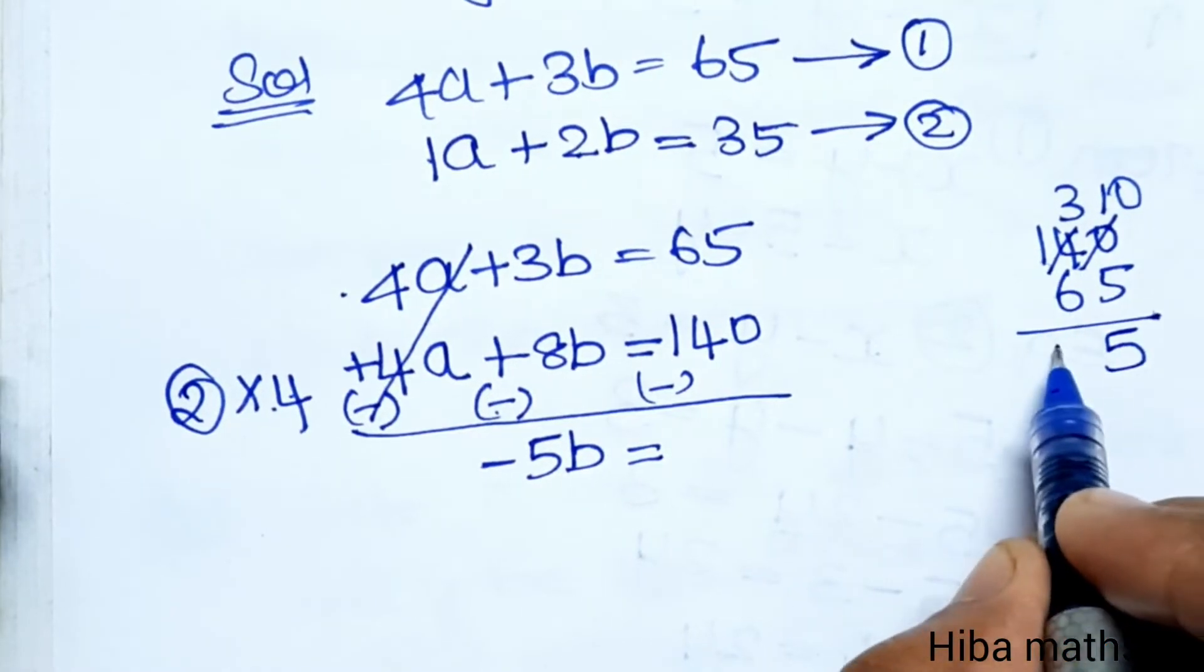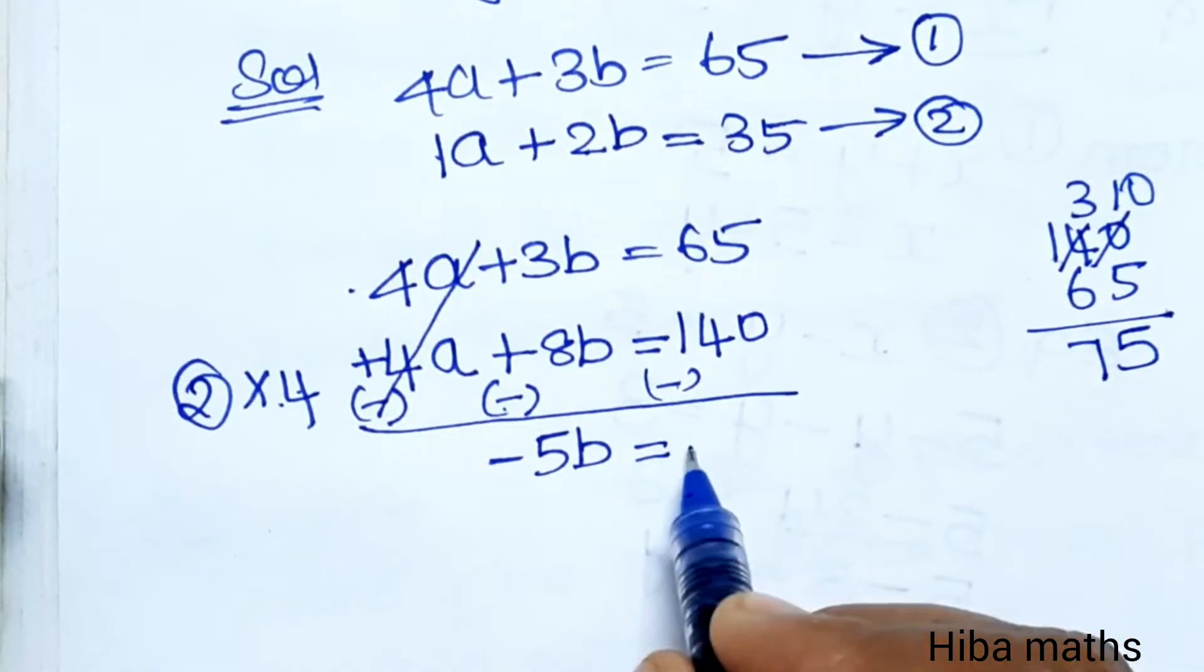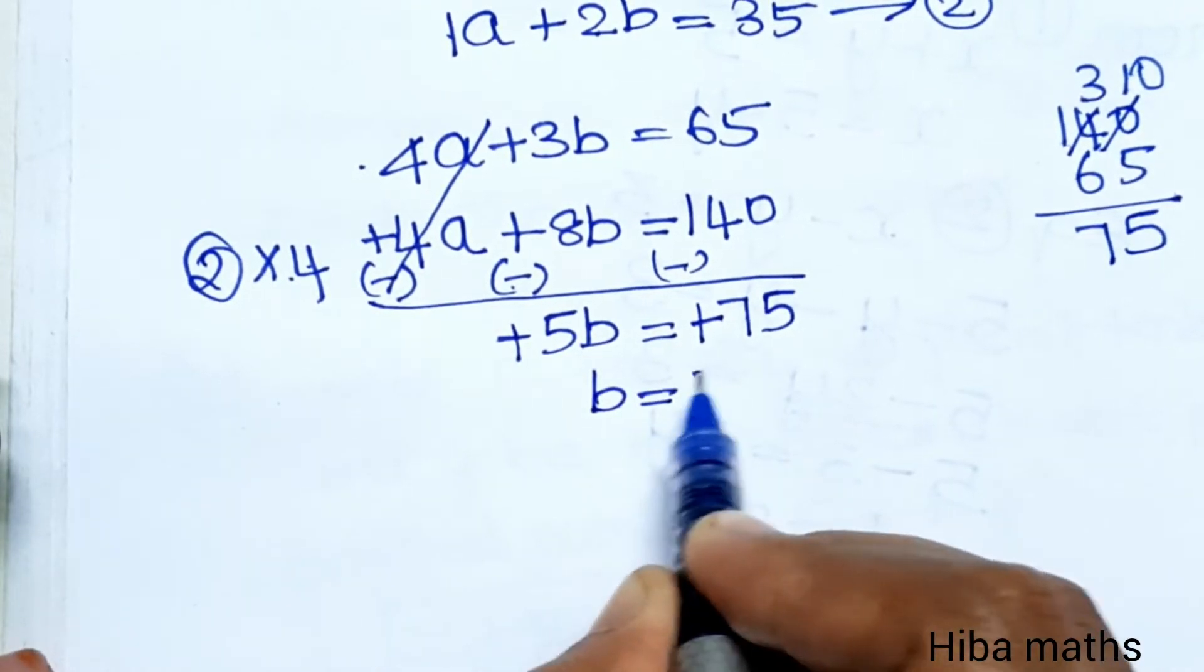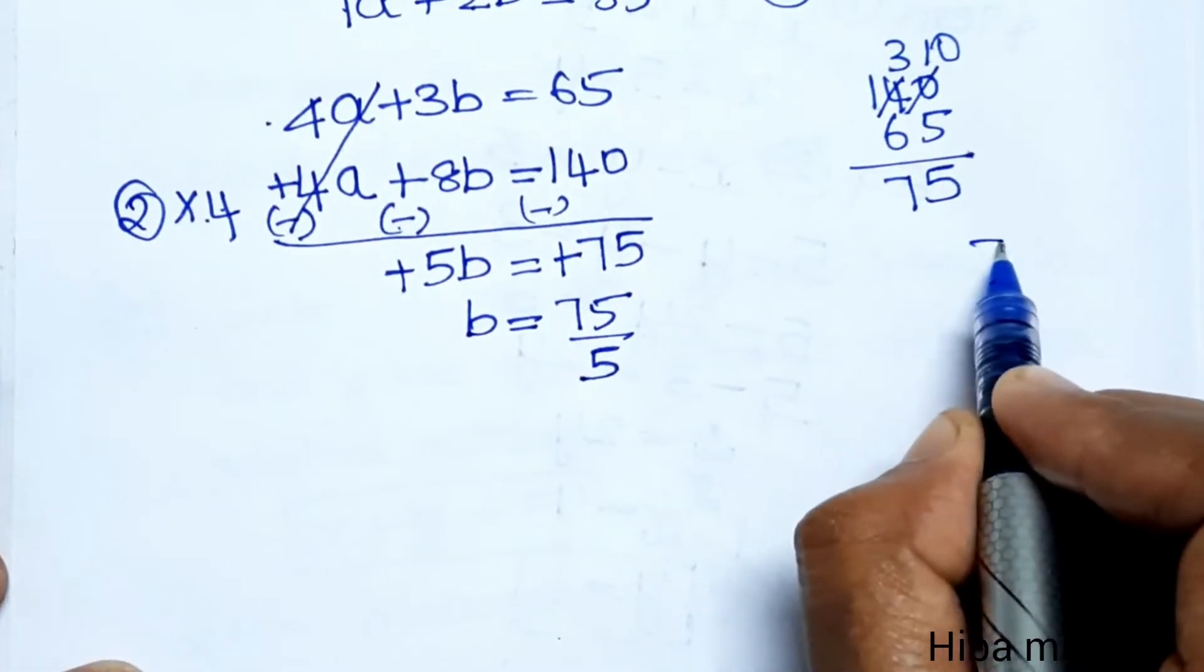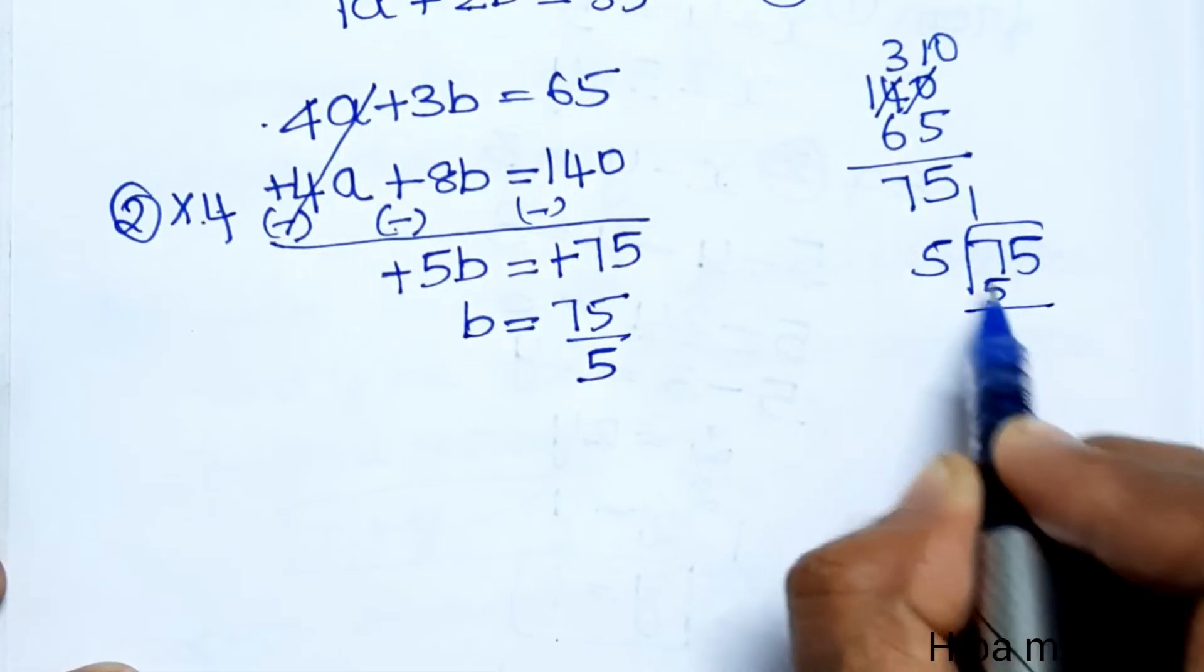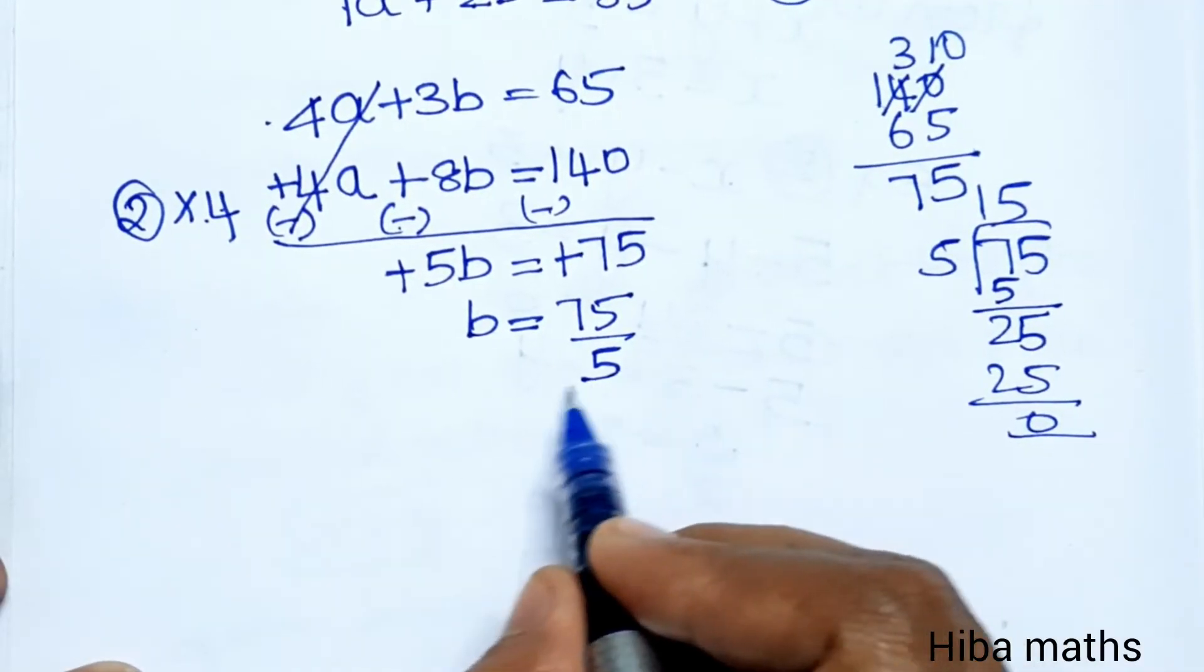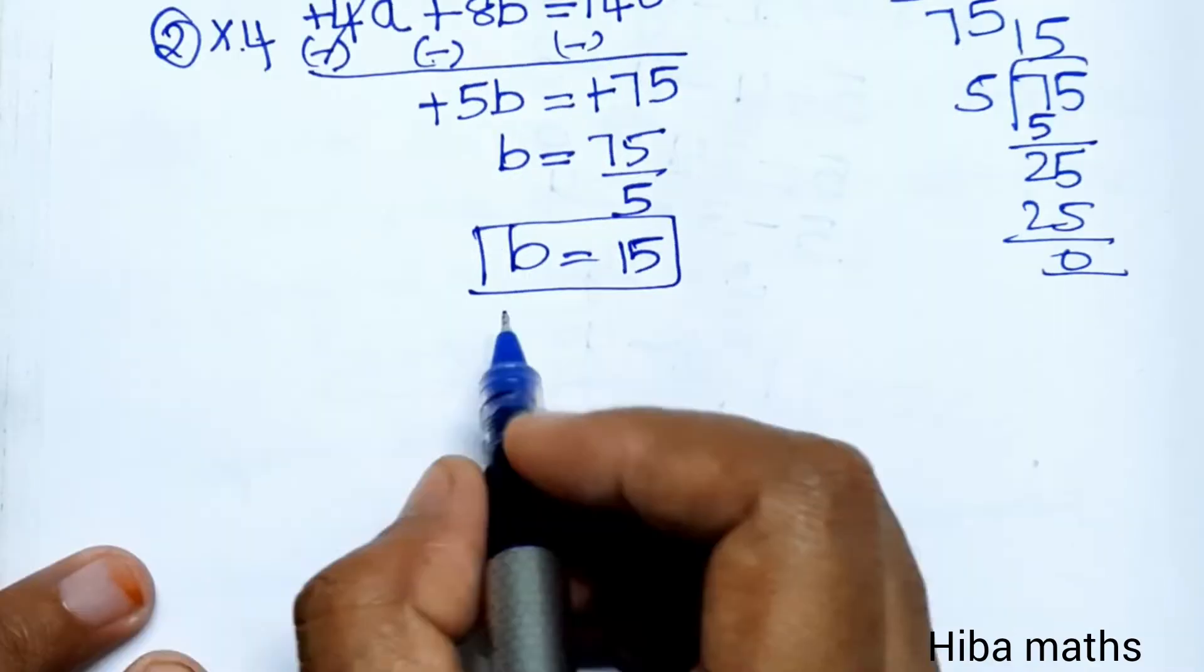So minus 5b equals minus 75. Minus minus equals plus, so 5b equals 75. Dividing by 5: b equals 75 divided by 5, which equals 15. So b equals 15.